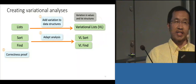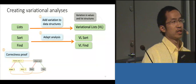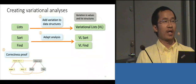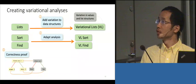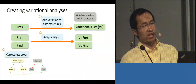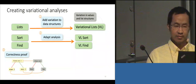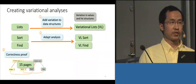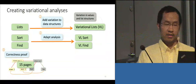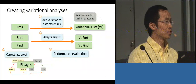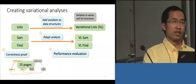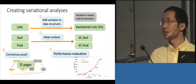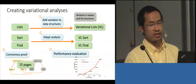Once we have this analysis, we need to show its correctness — essentially, that whether we apply the analysis first or make a selection first, it converges to the same result. This is not simple: in our variational type inference work, it's about 15 pages of proof. In the last step, we have to evaluate the performance of the variational analysis, which involves generating convincing benchmarks and applying the analysis.